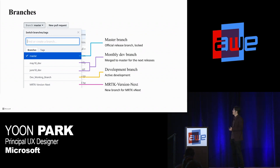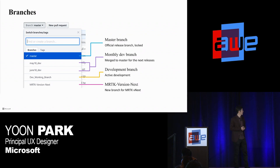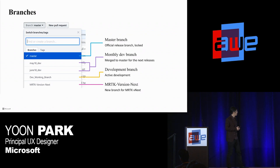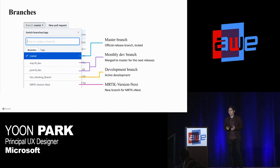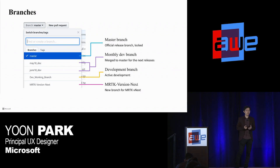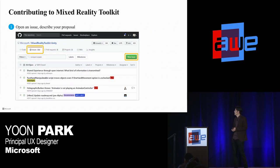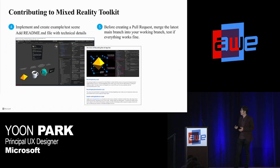In MRTK, we have multiple branches. Master is the official release branch and is always locked. We also have a monthly dev branch — MRTK targets monthly releases. The development branch will be changing soon as it is being used for MRTK Version Next development. MRTK Version Next is a new effort to make MRTK more flexible, modular, and to support other cross-platform devices. When you visit MRTK on GitHub, you can find this new effort under the Project tab.